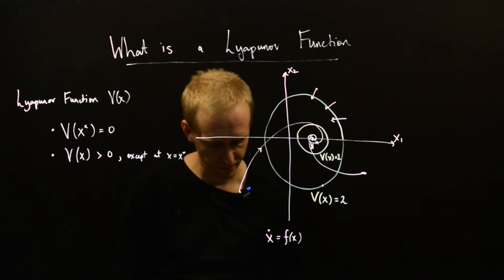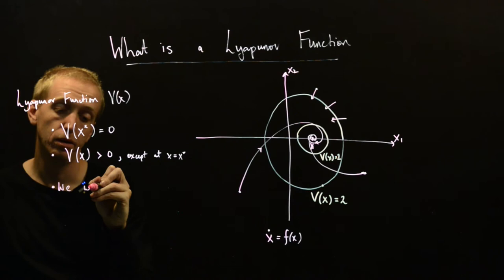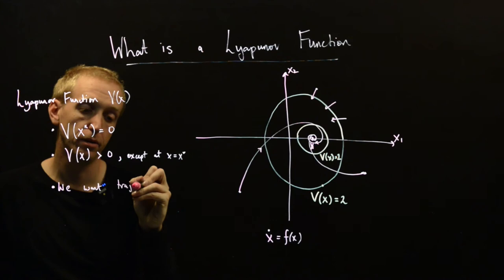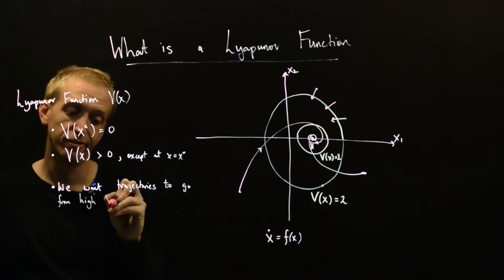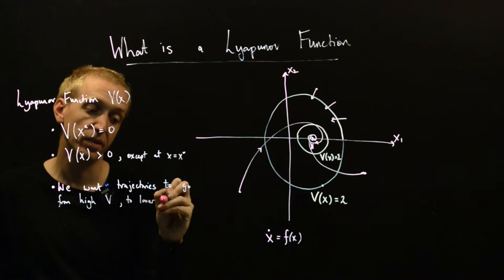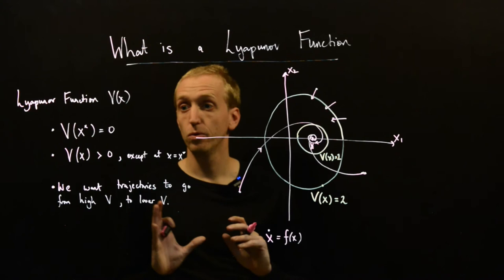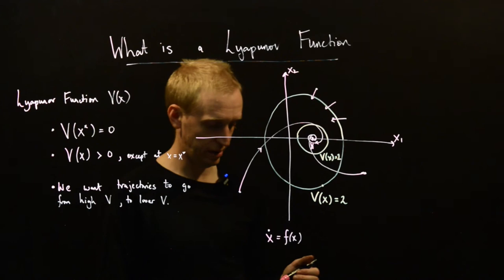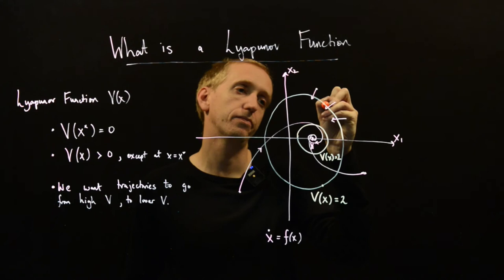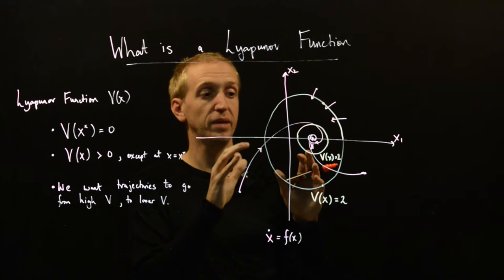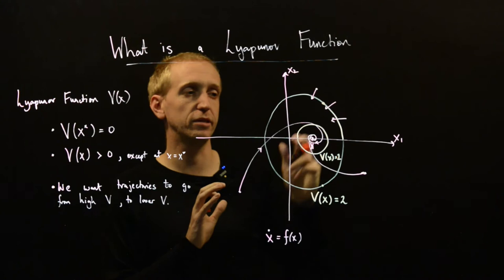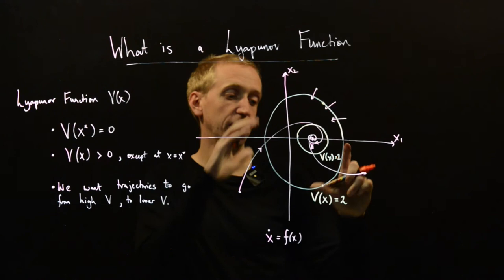So what do we want? Well, we want trajectories to go from high v, or high values of energy, to lower v. And how can we start to formalize this? Well, we need to introduce the gradient of the Lyapunov function. So let's just do that at this point here, say. Let's think about what the gradient is. And so, I don't know if you remember, but whenever you have higher dimensional functions, the gradient is always pointing uphill, and it's always perpendicular to these lines of constant v.